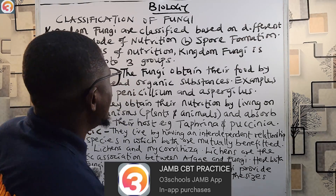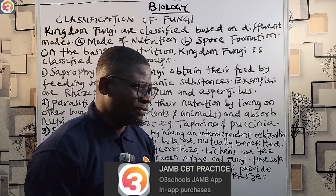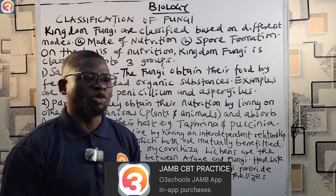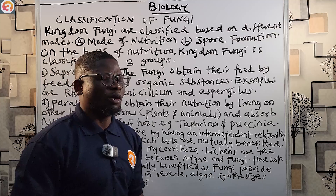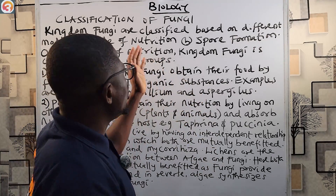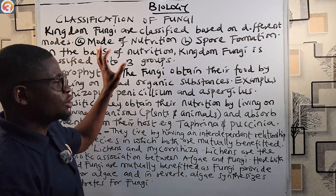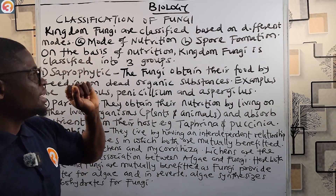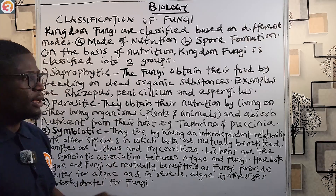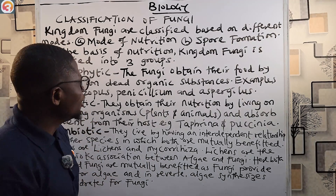Now let's look at the classification of fungi. Kingdom fungi are classified based on two different modes: the mode of nutrition — how they obtain their food — and the mode of spore formation — how their spores are formed. Based on the mode of nutrition, kingdom fungi is classified into three groups: saprophytic, parasitic, and symbiotic.